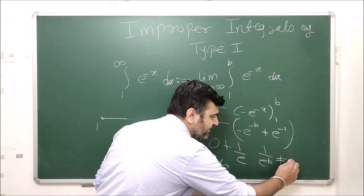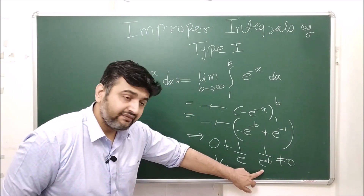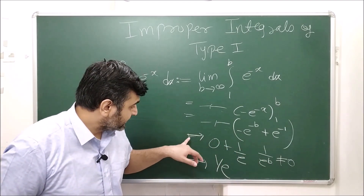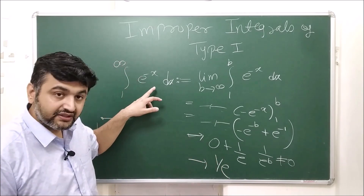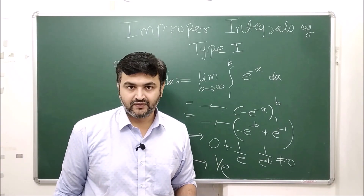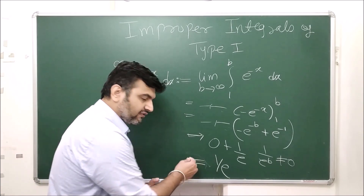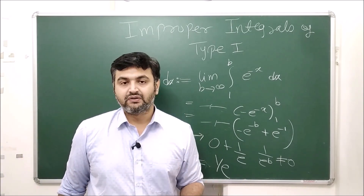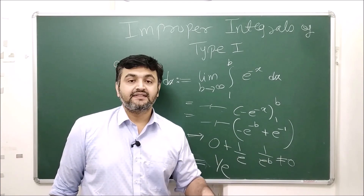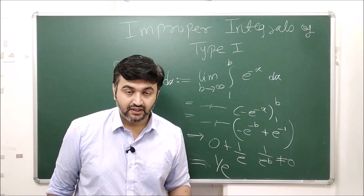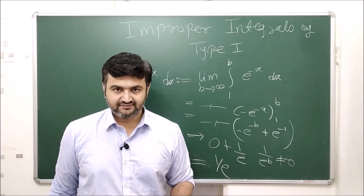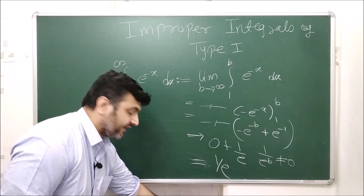Whenever a limit is involved, the terms convergent and divergent come into play. Note that 1/e^B is never exactly 0, but as B increases it approaches 0. The area under the curve approaches 1/e, which is a finite number. Whenever an improper integral gives a finite value, we say it converges. If the value is infinite, we say the improper integral diverges.